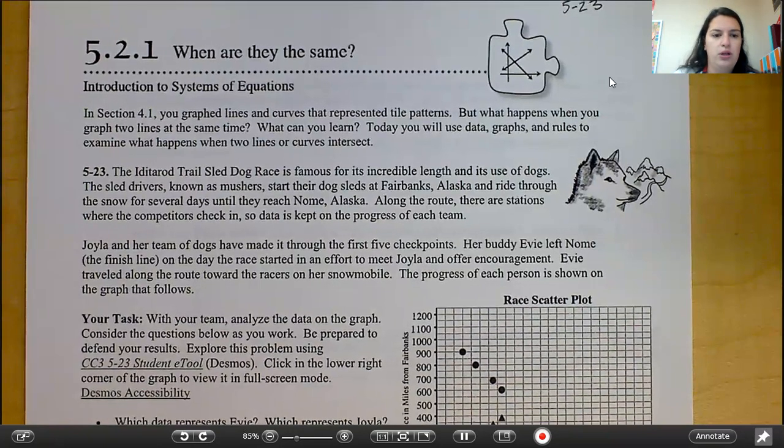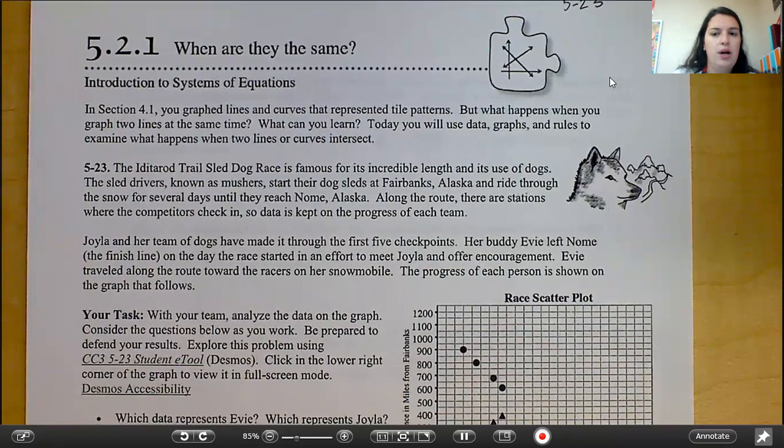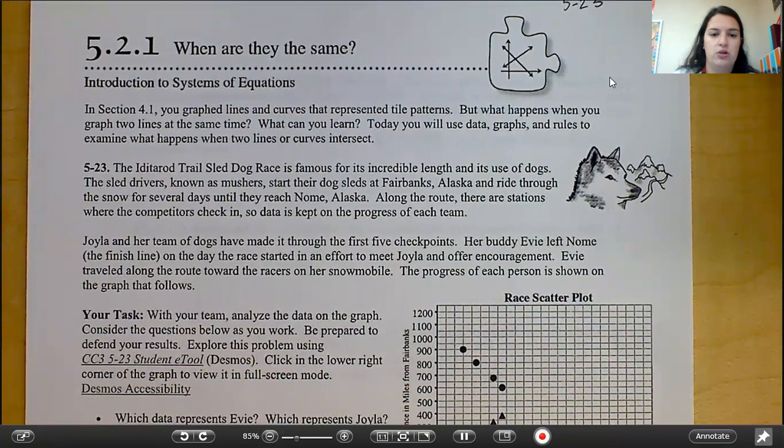In section 4.1, you graphed lines and curves that represented tile patterns. But what happens when you graph two lines at the same time? What can you learn? Today, you will use data, graphs, and rules to examine what happens when two lines or curves intersect.